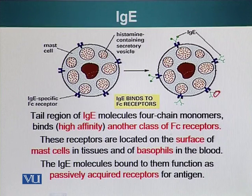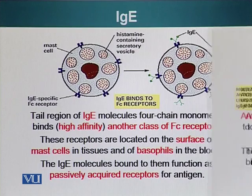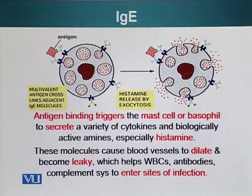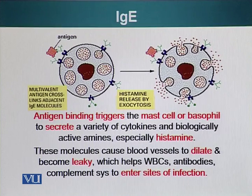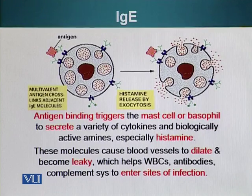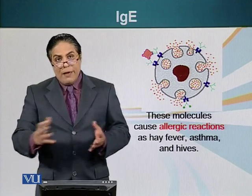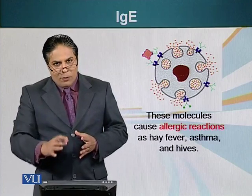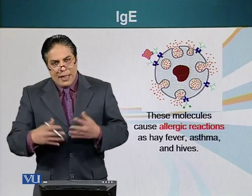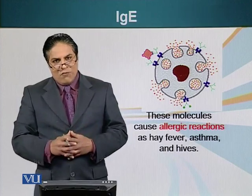IgE is secreted by B cells and passively acquired by mast cells or basophils. Once these antibodies are triggered, they cause vasodilation. The release of histamine can also cause symptoms of allergic reactions such as hay fever, asthma, and hives, when these cells are activated and release the histamine present in their vacuoles.